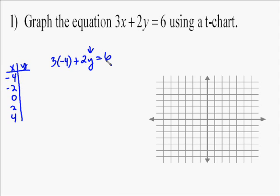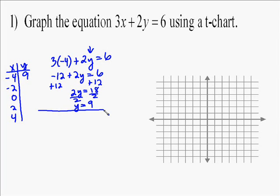So I plug in negative 4 for x, I get 3 times negative 4 plus 2y equals 6. Now it's just a matter of solving for y. You plug in your x value, then you solve for y. So to solve this, I get negative 12 plus 2y equals 6, so add 12 to both sides. You get 2y equals 18, divide by 2, y equals 9. So when I plug in negative 4 for x, I get 9 out for y.